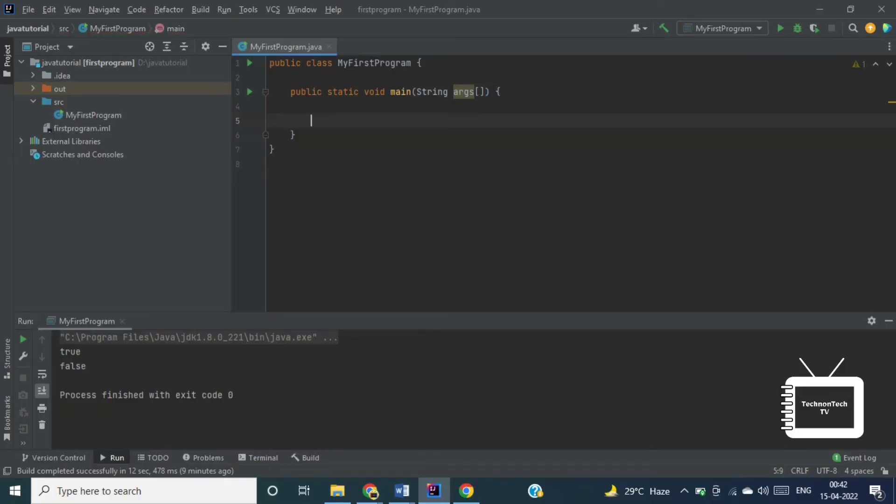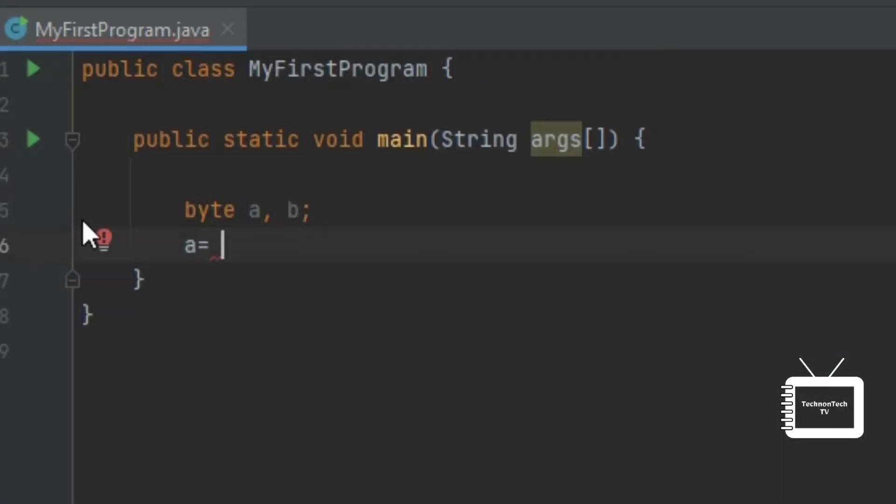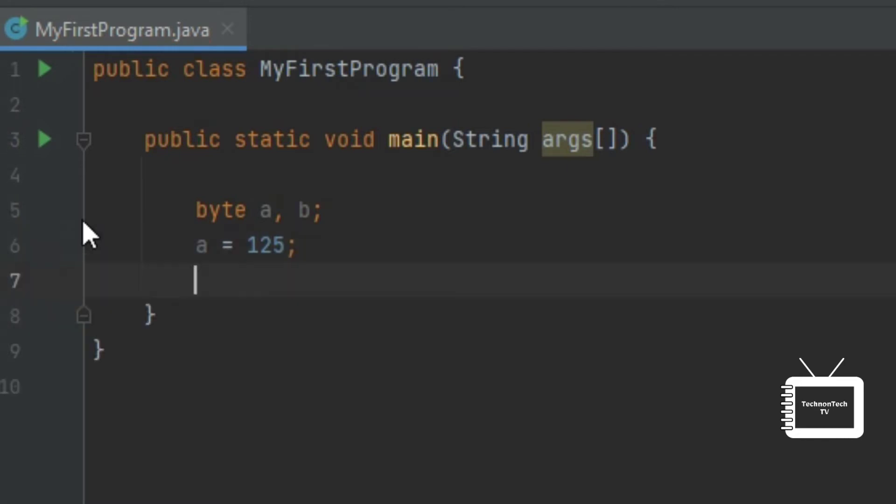Now let's write a small program and understand how it works. So here I am declaring two variables a and b of byte data type, and here I am assigning value 125 to variable a and 178 to variable b.